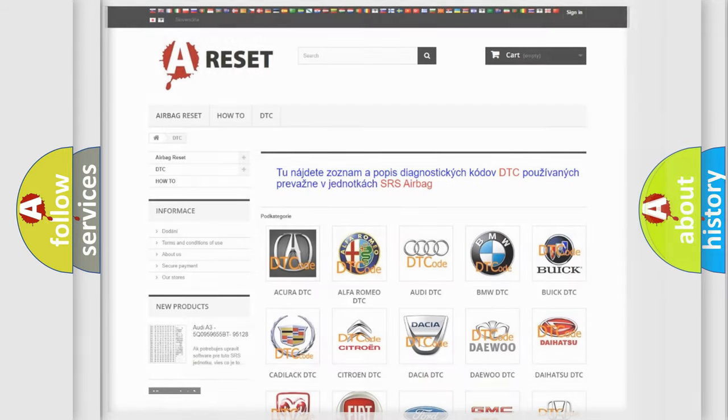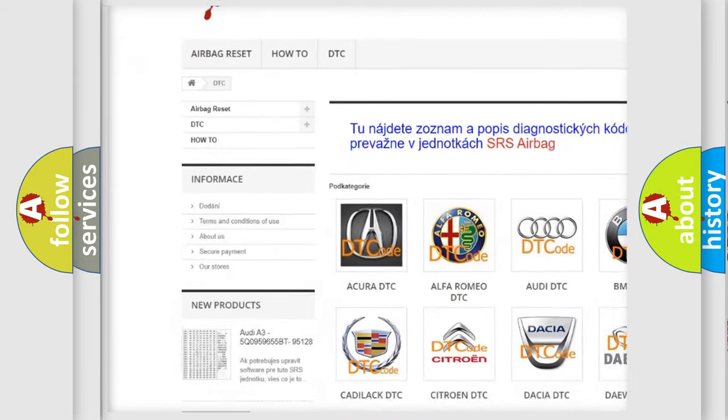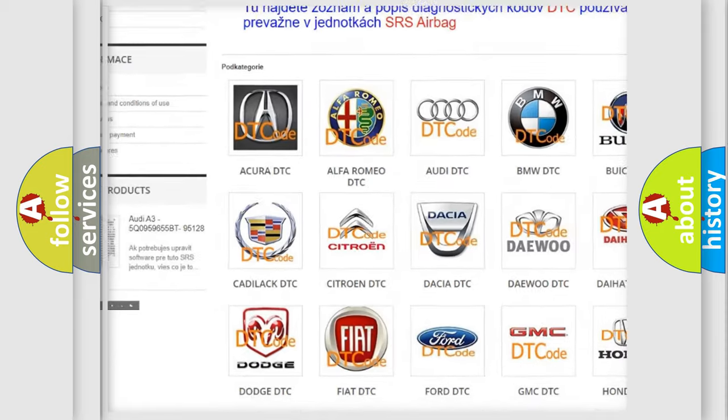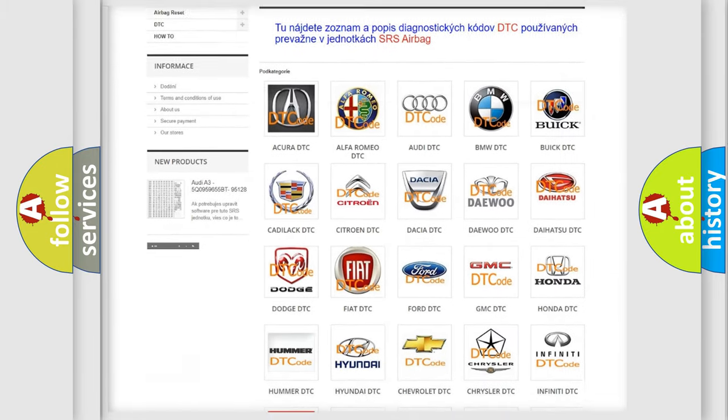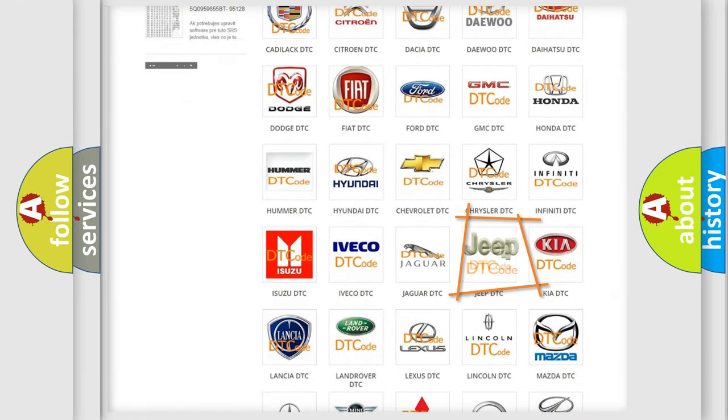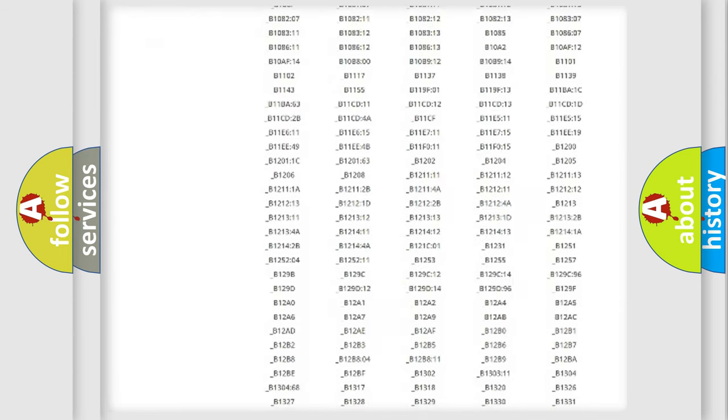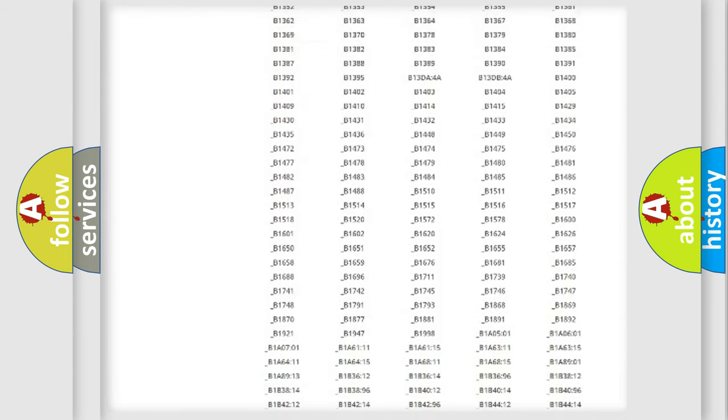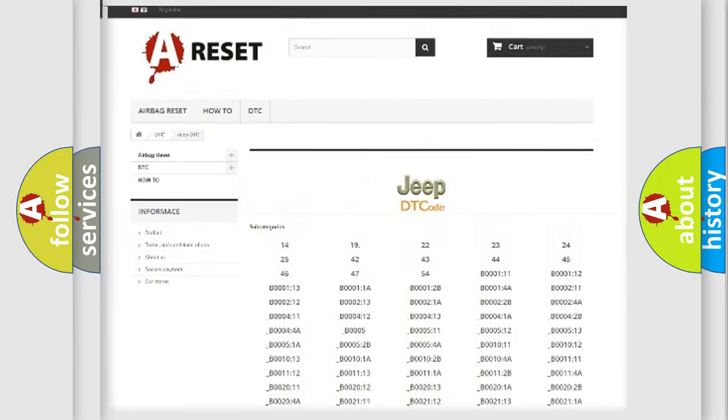Our website airbagreset.sk produces useful videos for you. You do not have to go through the OBD2 protocol anymore to know how to troubleshoot any car breakdown. You will find all the diagnostic codes that can be diagnosed in Jeep vehicles.